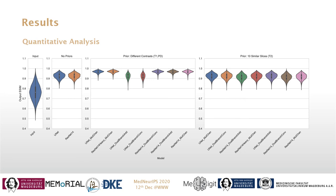The third set shows the results of the models which received different contrasts from the same subject as priors. And finally, the rightmost set shows the results for the models with 10 similar slices as priors.